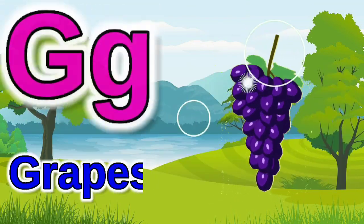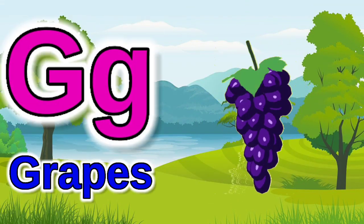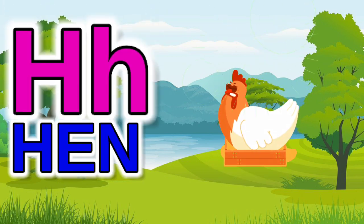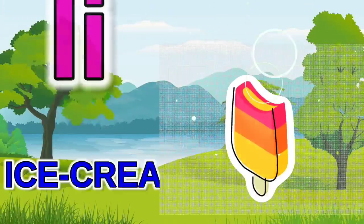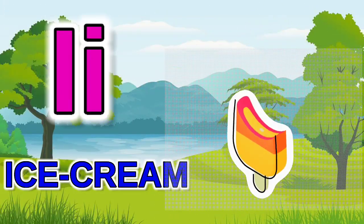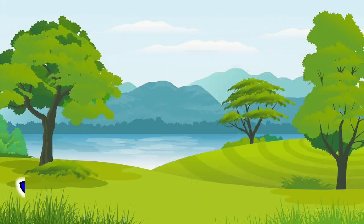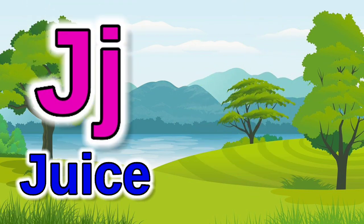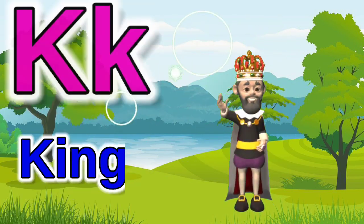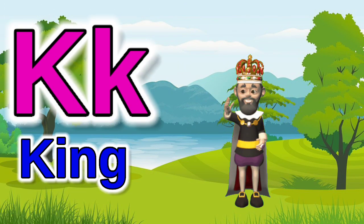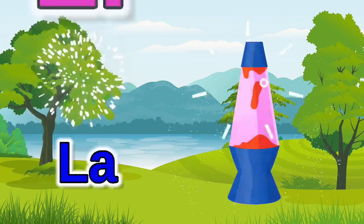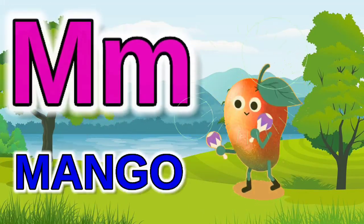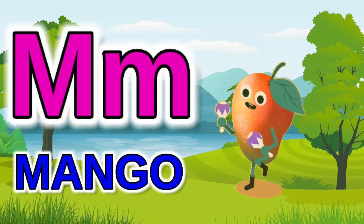G for grapes, H for hen, I for ice cream, J for juice, K for king, L for lamb.